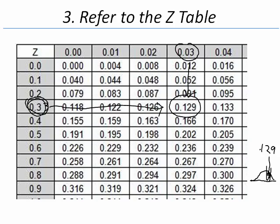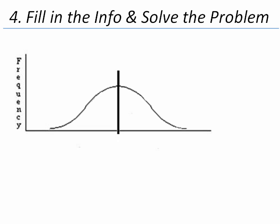So that area is 0.129. We got the information we need to solve this problem. Our fourth and final step is to fill in all the information and solve the problem. We have our mean of 70, our value of 74.